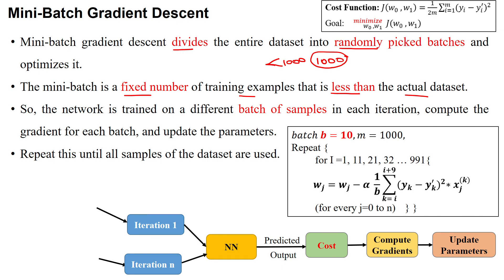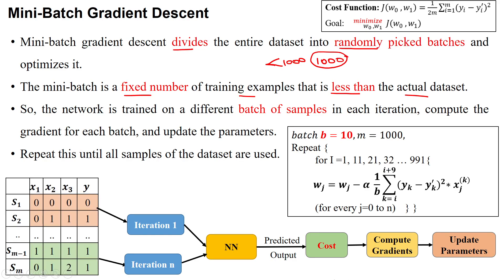We divide the dataset into mini-batches, or groups of samples, where the batch size is less than the given dataset. For example, looking at the table here, which has three features and a label with m number of samples — the samples are divided so that each batch has two samples. Each mini-batch is passed into the neural network for each iteration, then the output is predicted.